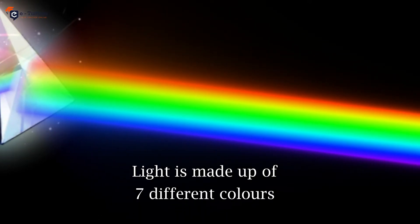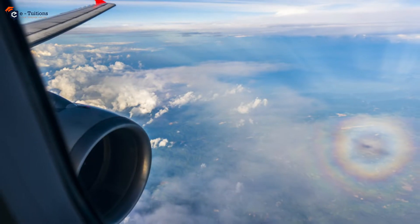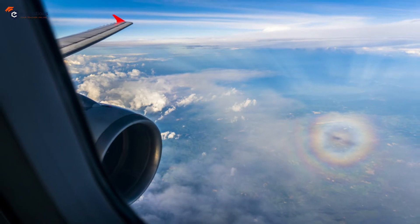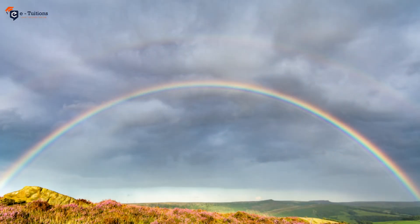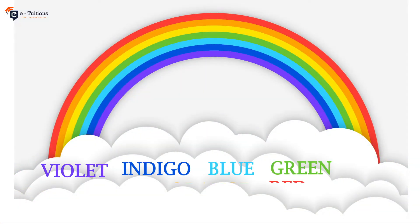This also states that white light is made up of seven different colors. A rainbow is viewed as a circular arc in the sky. From the ground, it is observed as a half circle. It has seven colors: violet, indigo, blue, green, yellow, orange, and red.